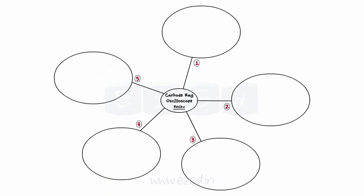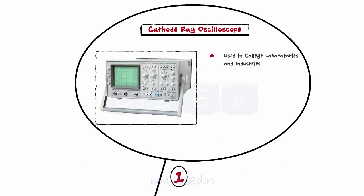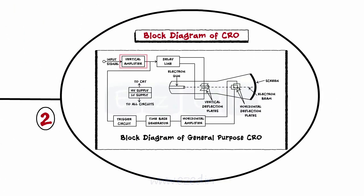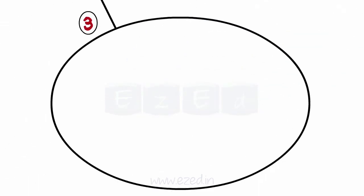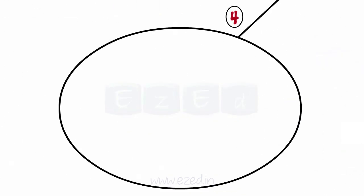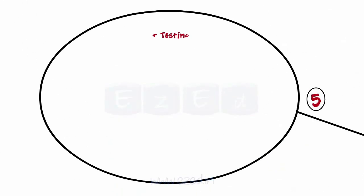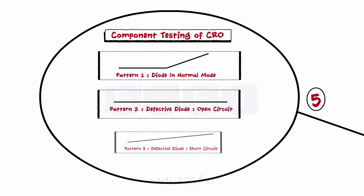Let's take a quick review of what we have learnt in this lecture. A CRO is an electronic instrument very commonly used in college laboratories and industries to analyse circuits by plotting different waveforms. The different blocks of CRO are vertical amplifier, delay line, trigger circuit, time base generator, horizontal amplifier, and cathode ray tube, CRT. Cathode ray tube is the heart of a CRO, consisting of three sections: electron gun assembly, deflection plates, and phosphor screen. We also learned measurement of voltage using the volt per division knob and measurement of frequency using the time per division knob. Lastly, we studied component testing using CRO, wherein we analysed a diode with three different patterns.